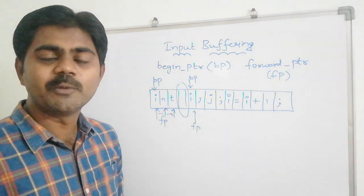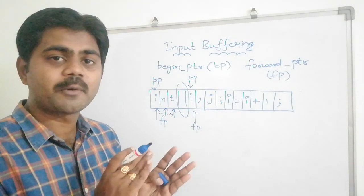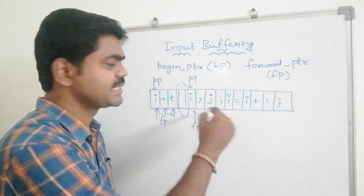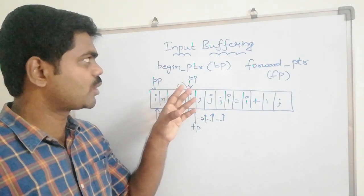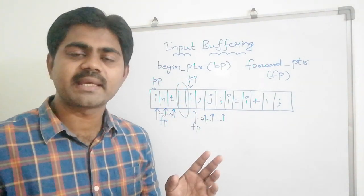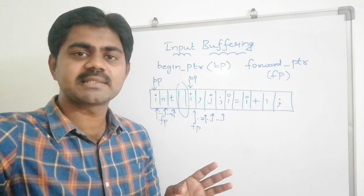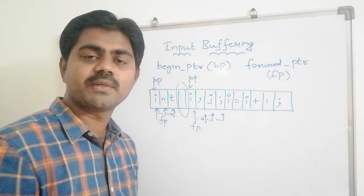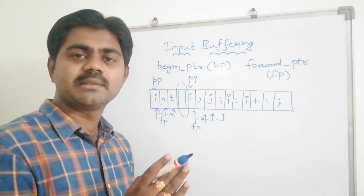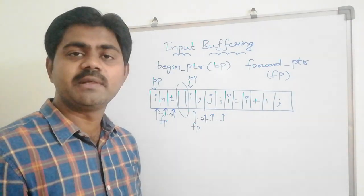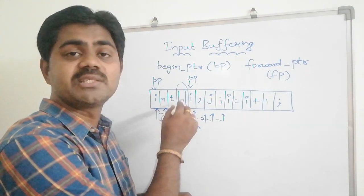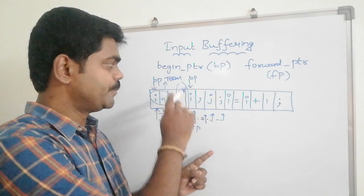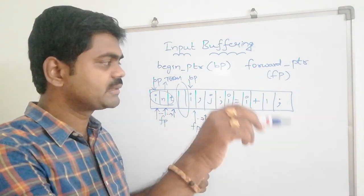The begin pointer never changes and the forward pointer keeps moving one position to the right, coming to each character in sequence. When we encounter a blank space after 'int', both pointers reset to 'i'. We already finished scanning 'i', 'n', 't', so that complete string can be called a token.